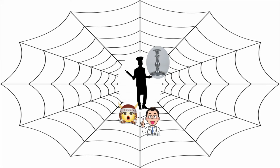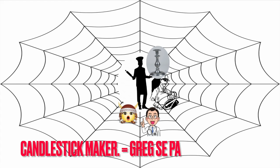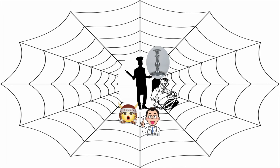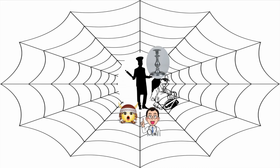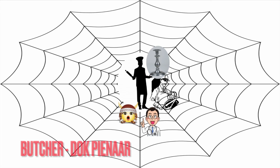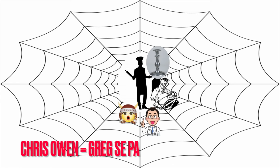Connected to the baker is the candlestick maker — who we find out later is Greg's dad — and also the butcher. That is the trio from the previous book, Project Nursery Rhyme: the baker, the candlestick maker, the butcher. They were involved in all these horrendous crimes. The butcher and the candlestick maker ended up in jail. Using their real names: the butcher is Doc Pinar, who used to be the principal of Lawson College, and the candlestick maker — Greg's father.